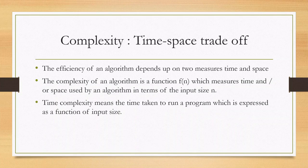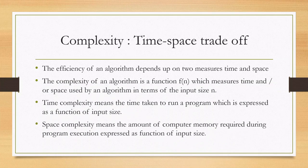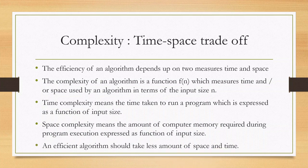Time complexity means the time taken to run a program, expressed as a function of input size. When the input size increases, the time taken for execution will also increase. Space complexity means the amount of computer memory required during program execution, also expressed as a function of input size. An efficient algorithm should take less amount of space and time.